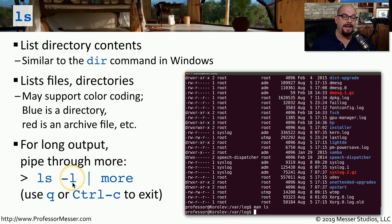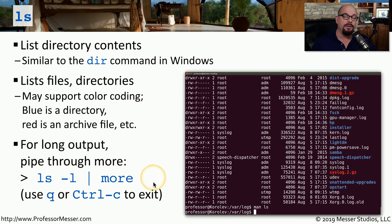If you use the -l option, you may get pages of information. One way to paginate this and many other Linux commands is to put the pipe symbol and then 'more'. This allows you to see the output but stop after every page, letting you step through one page at a time. If you'd like to exit back to the command line, you can press Q or use Control C.